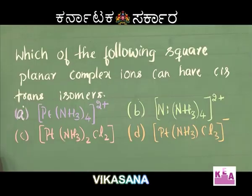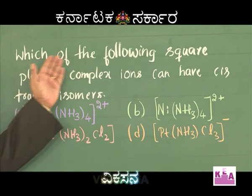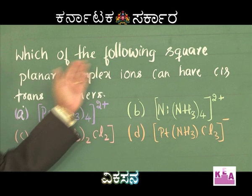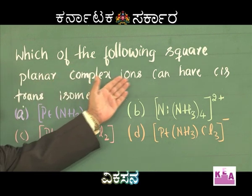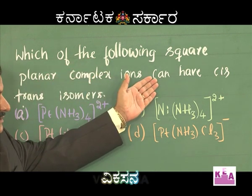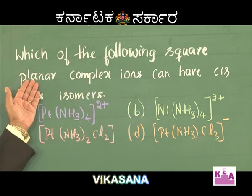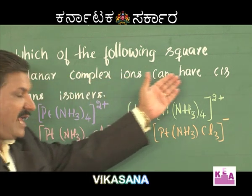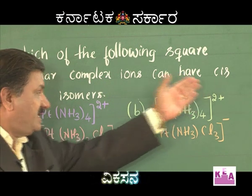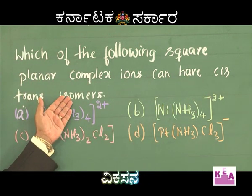Geometrical isomerism. Look at the question: which of the following square planar complex ions can have cis-trans isomers or geometrical isomers?